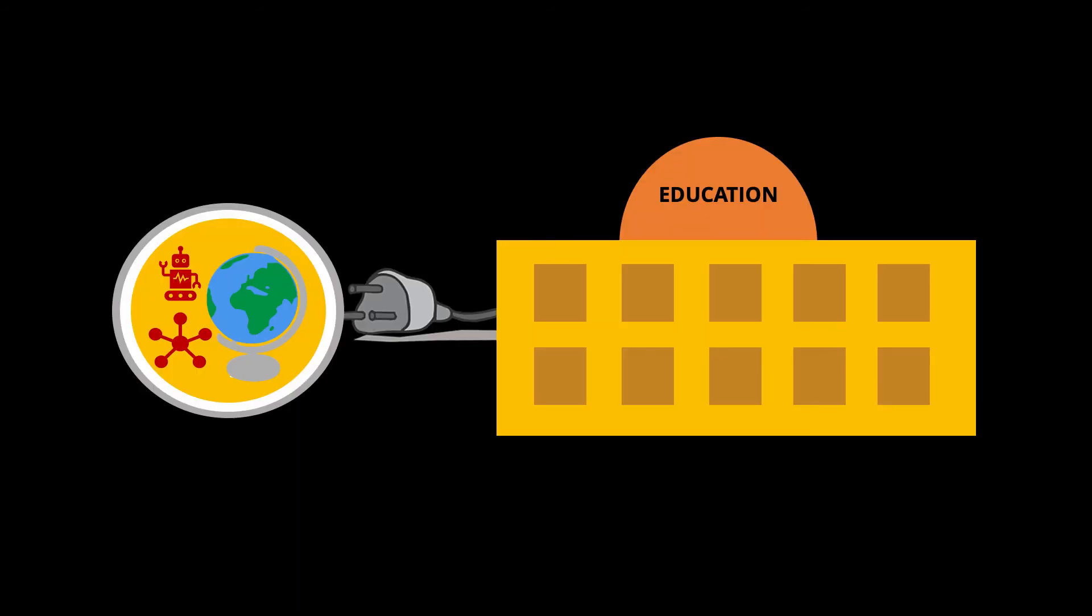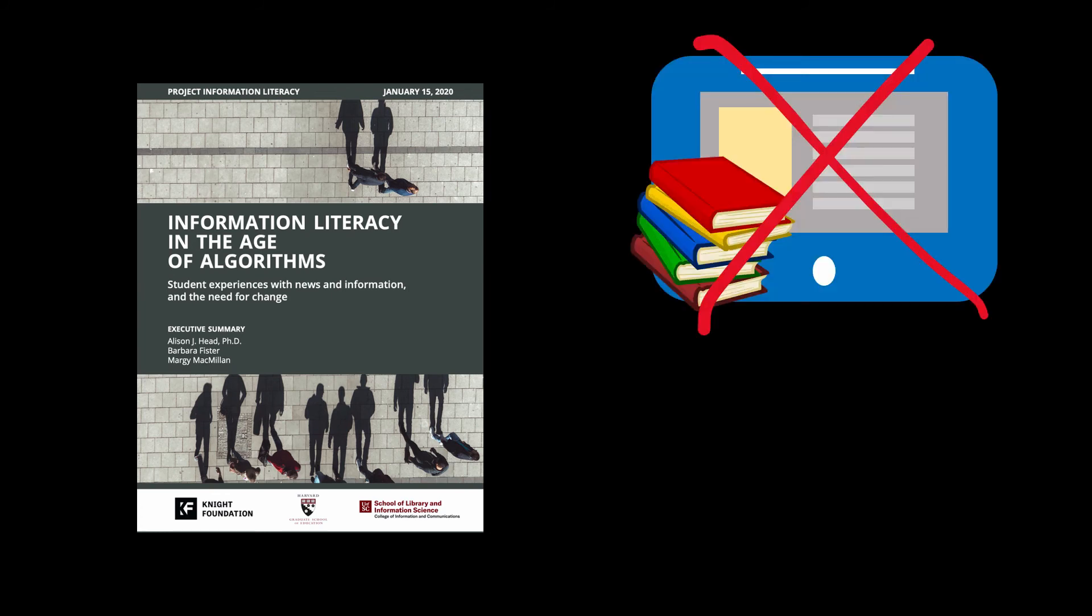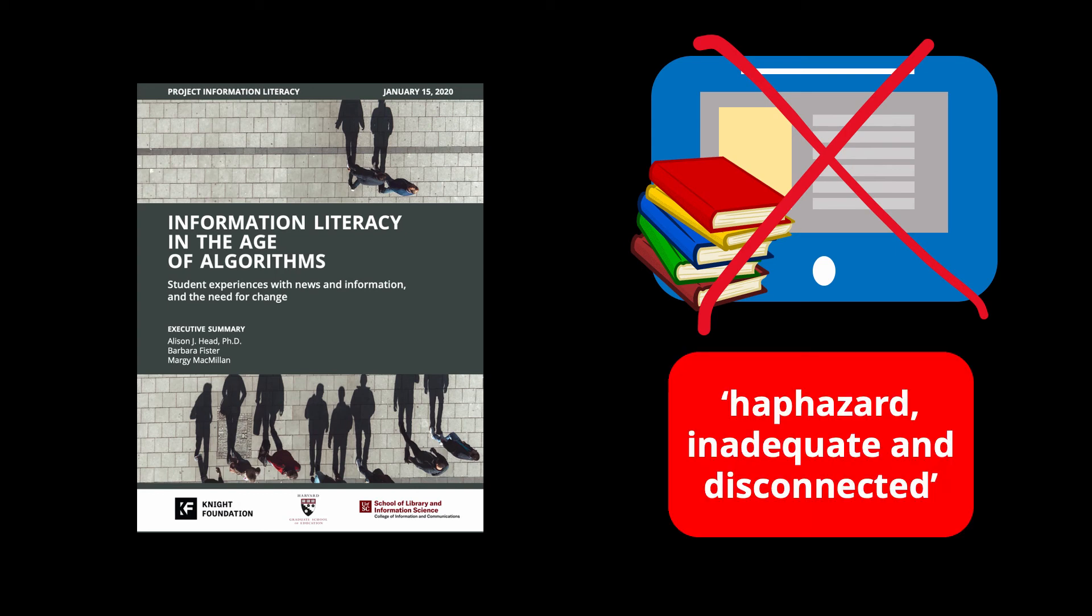Seen from another angle, digital literacy is the missing link between education and society. A 2020 study led by the Project Information Research Institute reported the following. Undergraduate students felt that the critical information skills taught as part of their courses gave them poor strategies for managing the massive information they daily encounter. In general, students felt that information literacy and critical thinking instruction throughout all of their education was haphazard, inadequate and disconnected.